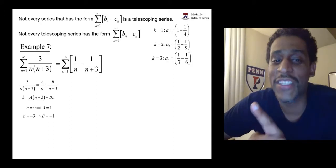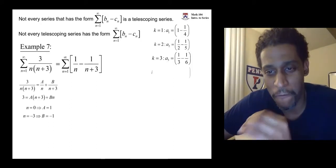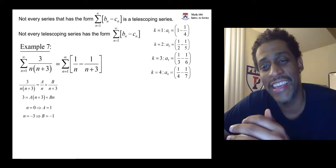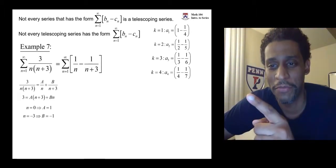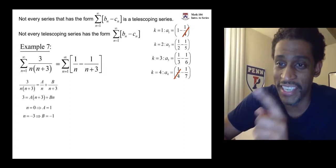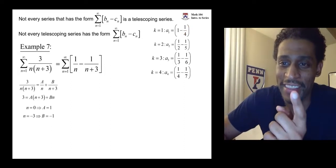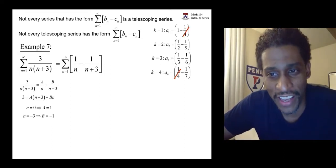When k is 4, a fourth minus a seventh. Cancellation? Way back from the first term is a negative 1 fourth. And this positive 1 fourth is here now.